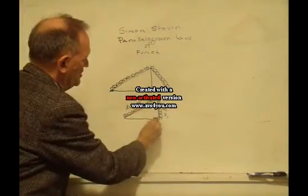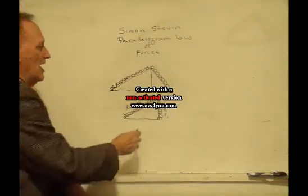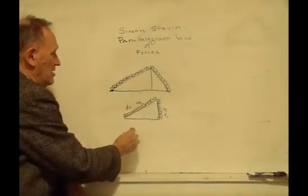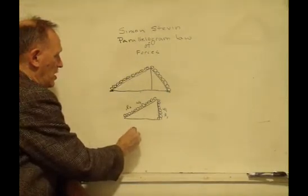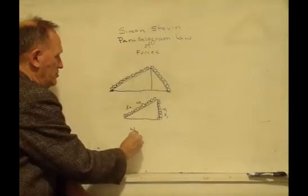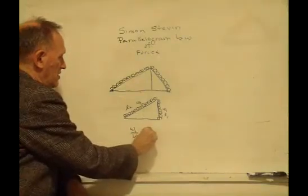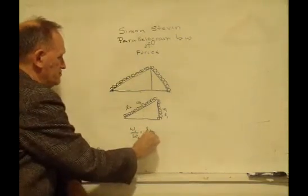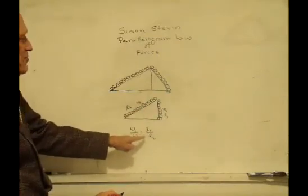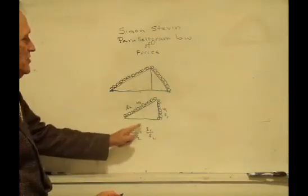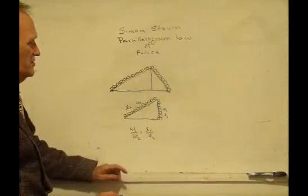this is a right triangle here. I can simply write, w1 over w2 is equal to l1 over l2. The ratio of these different weights is equal to the ratio of their respective lengths.